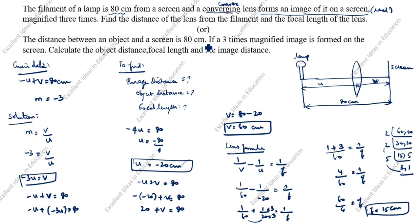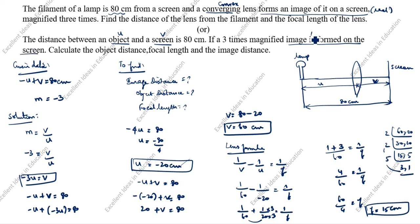Note that a second version of this problem states: the distance between an object and the screen is 80 centimeters, with a 3-times magnified image formed on the screen. The phrase 'image formed on the screen' means it is a real image, so magnification is minus 3. We calculate object distance U, image distance V, and focal length f — the same answers: U equals 20 cm, V equals 60 cm, f equals 15 cm. Thanks for watching this video.